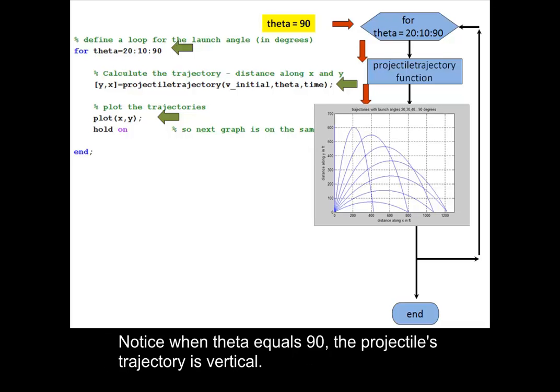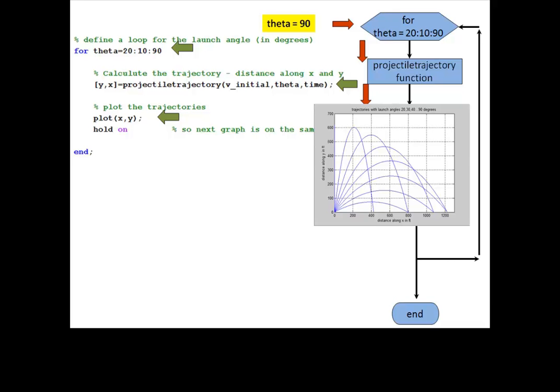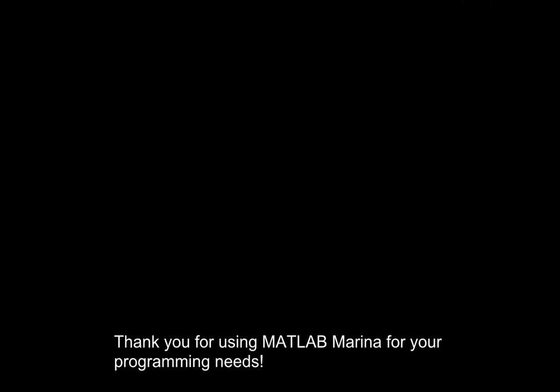Notice, when theta equals 90, the projectile trajectory is vertical. This is the end of the loop. Thank you for using MATLAB Marina for your programming needs.